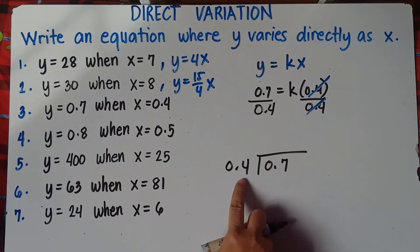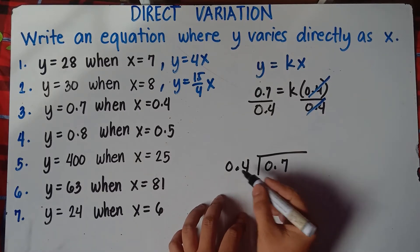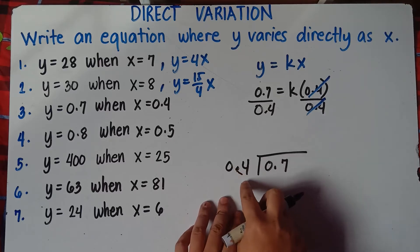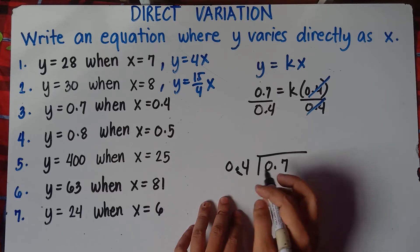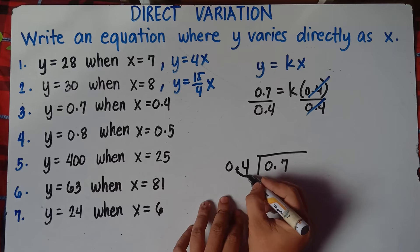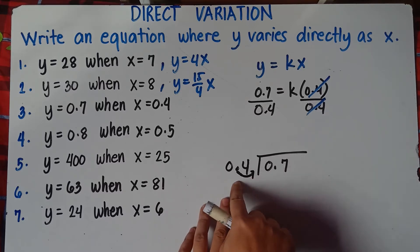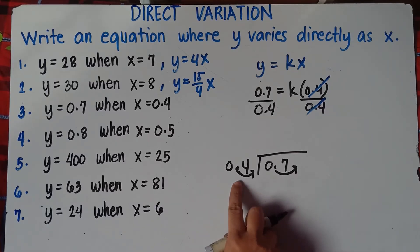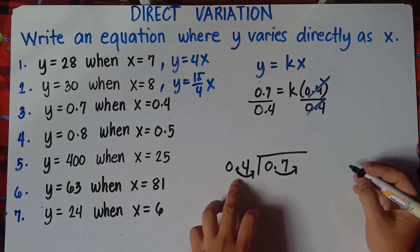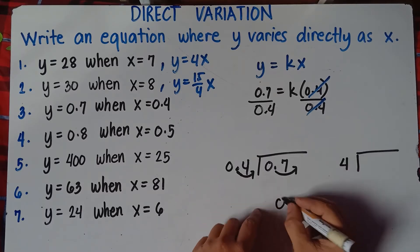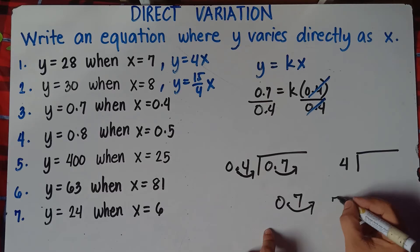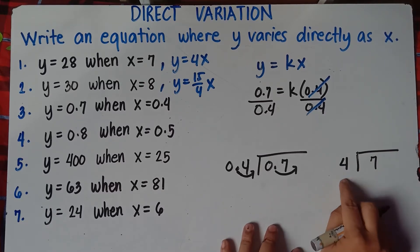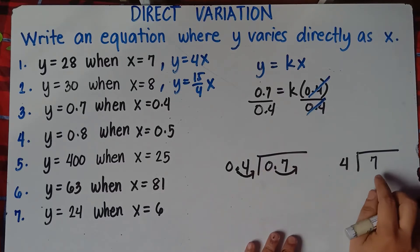Since our divisor is a decimal, we need to adjust. Move one decimal place from left to right to make this divisor a whole number, because it's complicated if your divisor is a decimal. Once you move one unit on the divisor, you also move one unit on the dividend to keep the equation balanced. So instead of 0.4, it becomes whole number 4, and instead of 0.7, it becomes 7. So this will be 7 divided by 4.